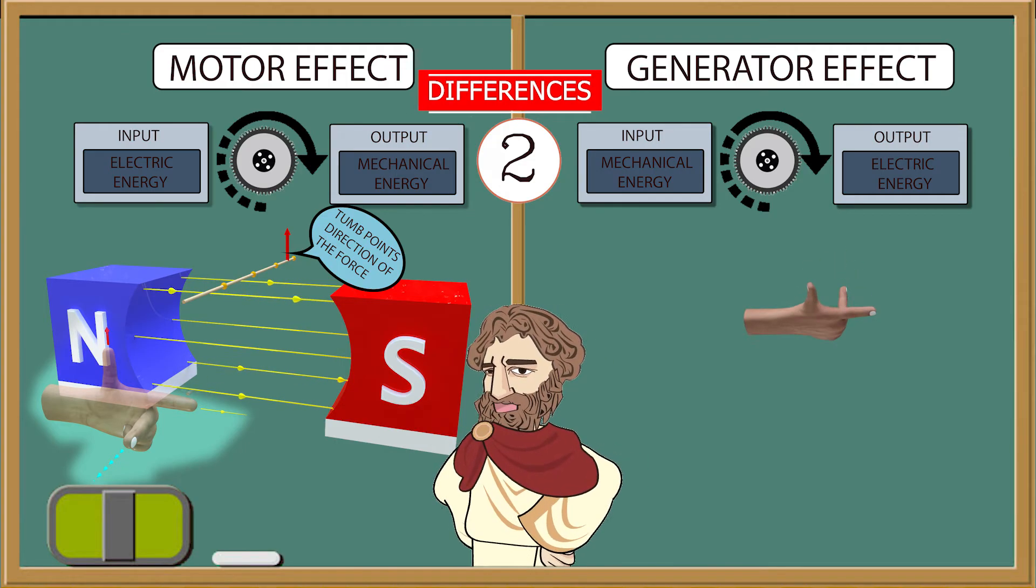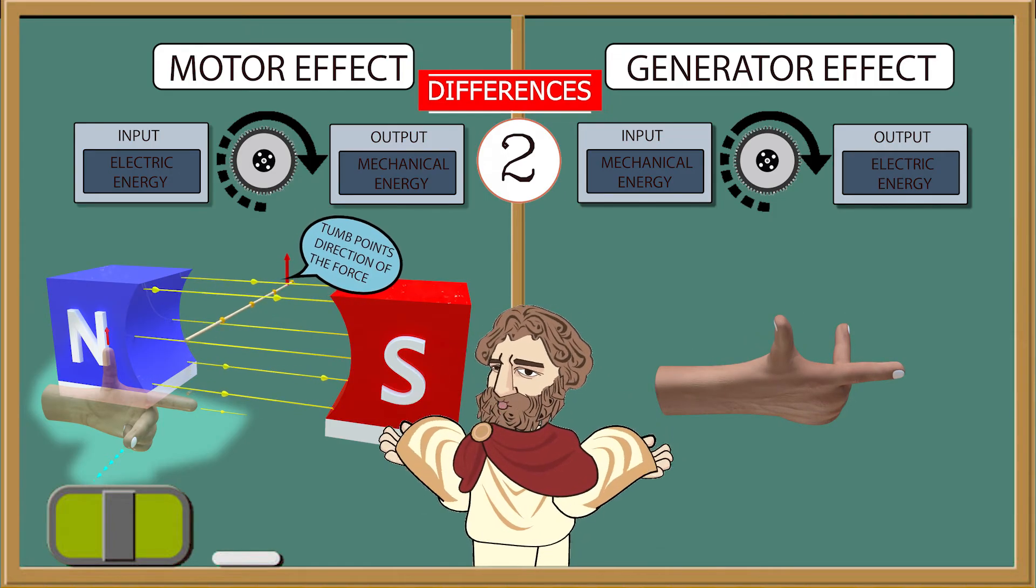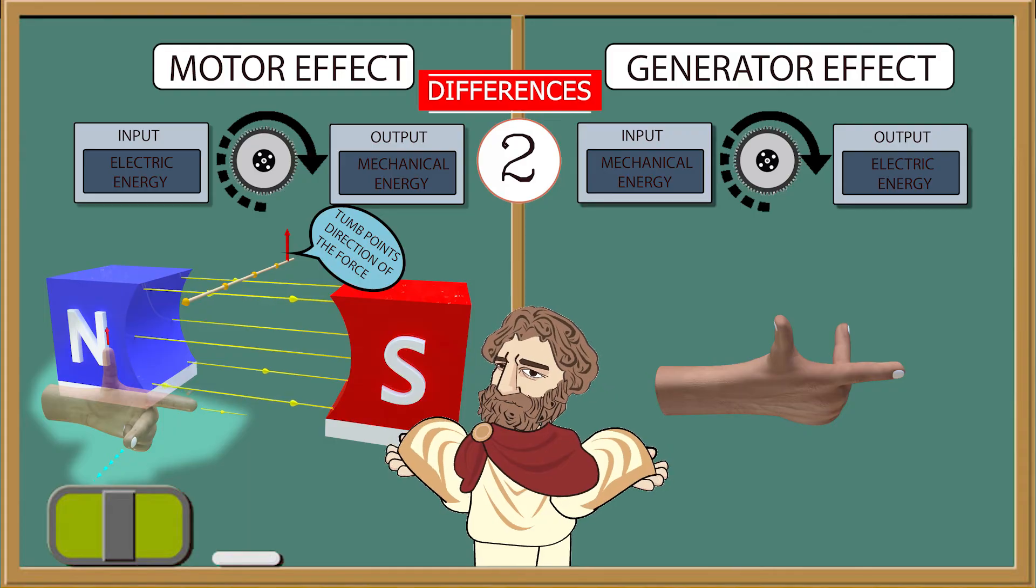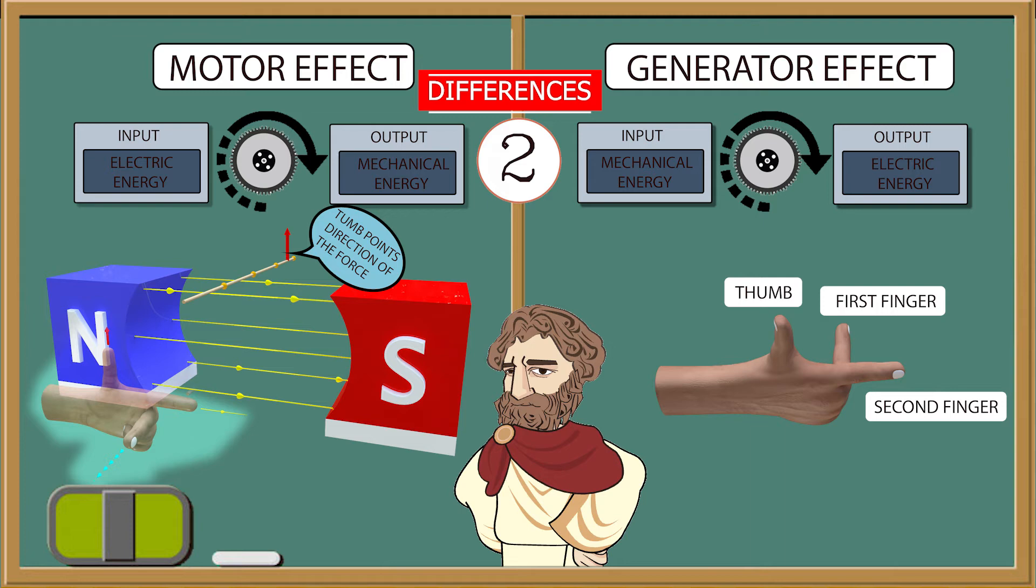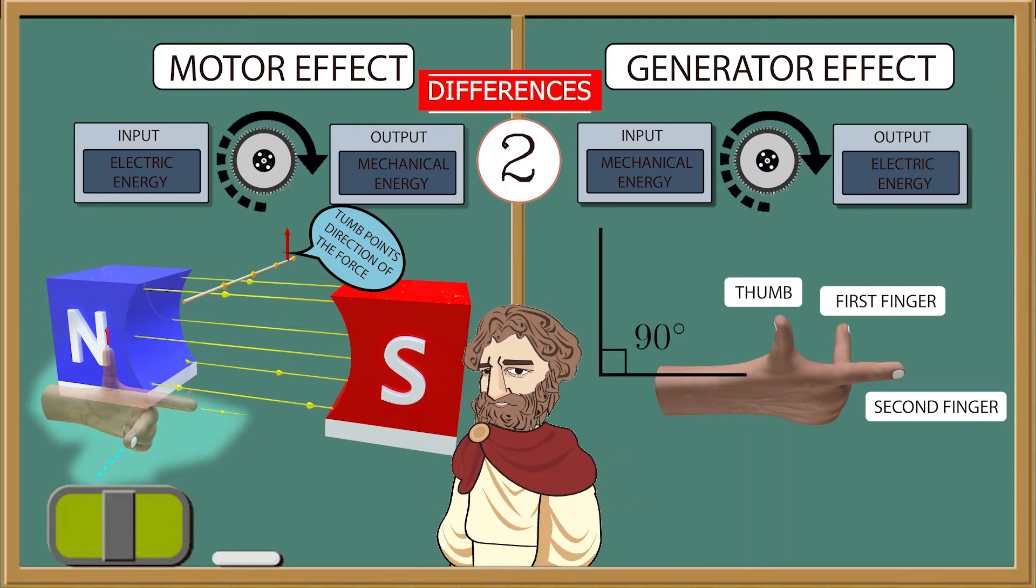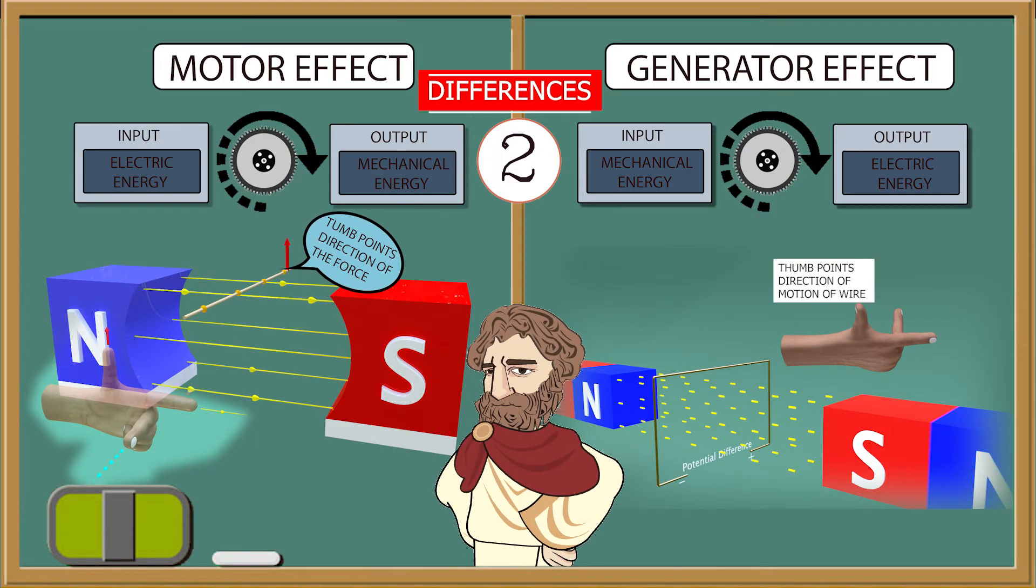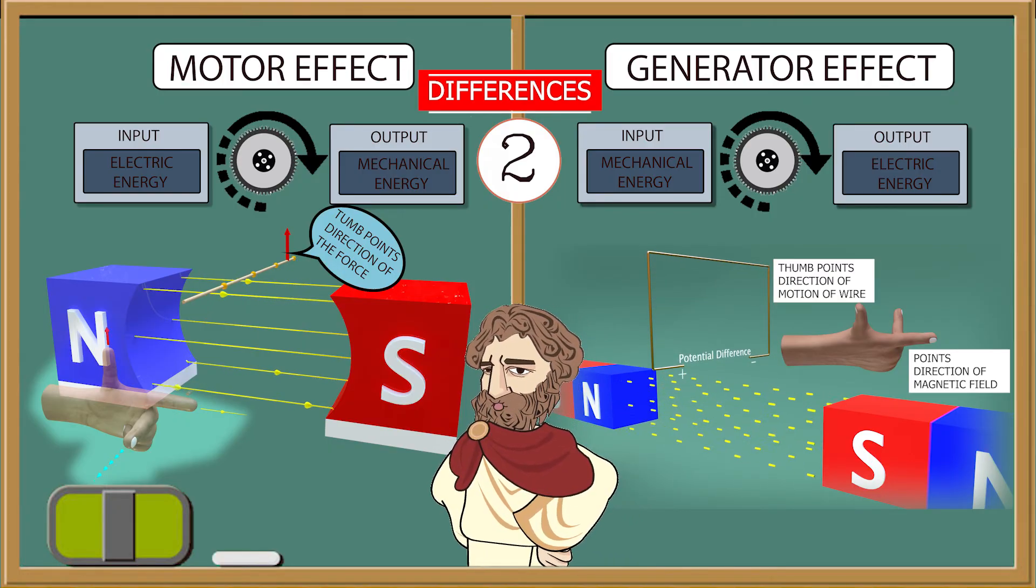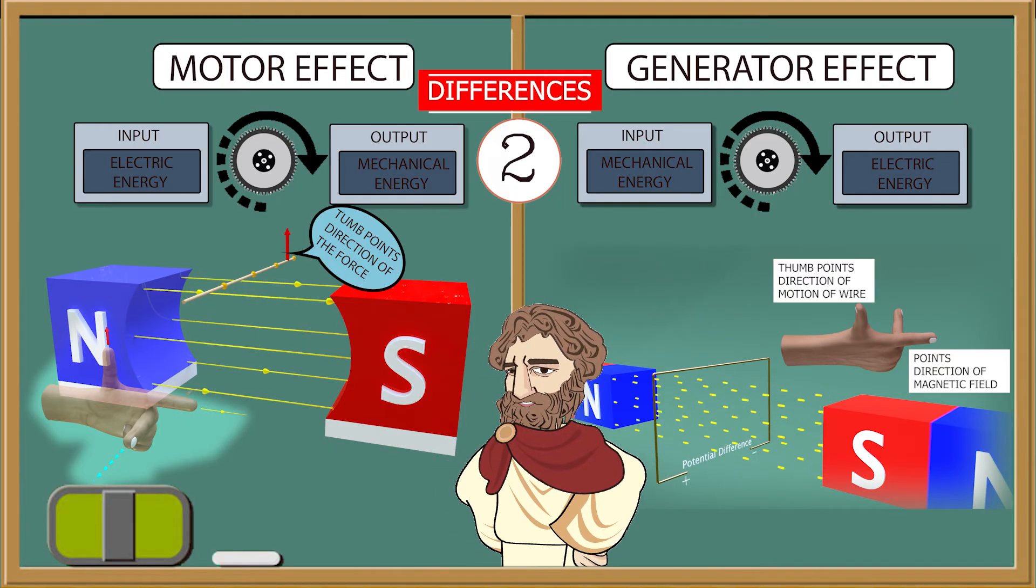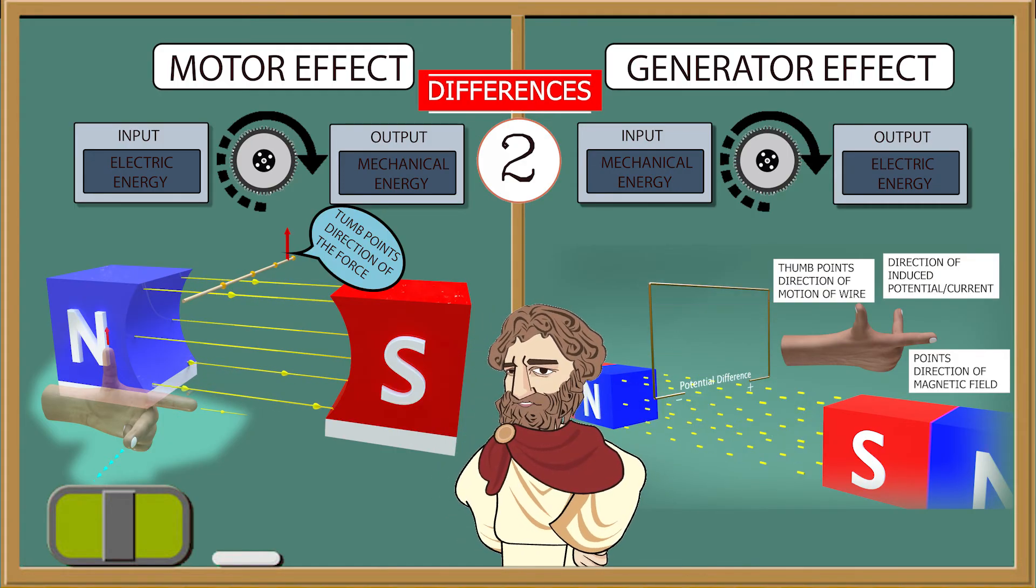The generator effect follows Fleming's right hand rule. How can we use Fleming's right hand rule? First place your thumb, first finger and second finger in such a way that they are mutually perpendicular to each other. We have to apply the right hand in such a way that your thumb points in the direction of motion of the wire. Your forefinger points in the direction of the magnetic field. Then, the second finger gives you the direction of the induced current.